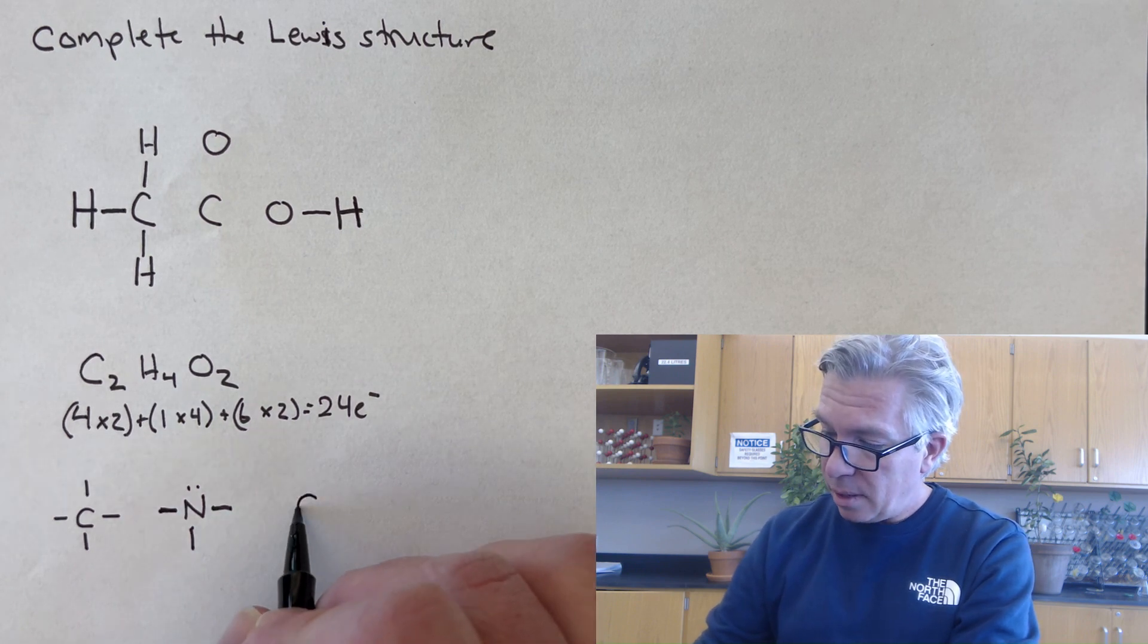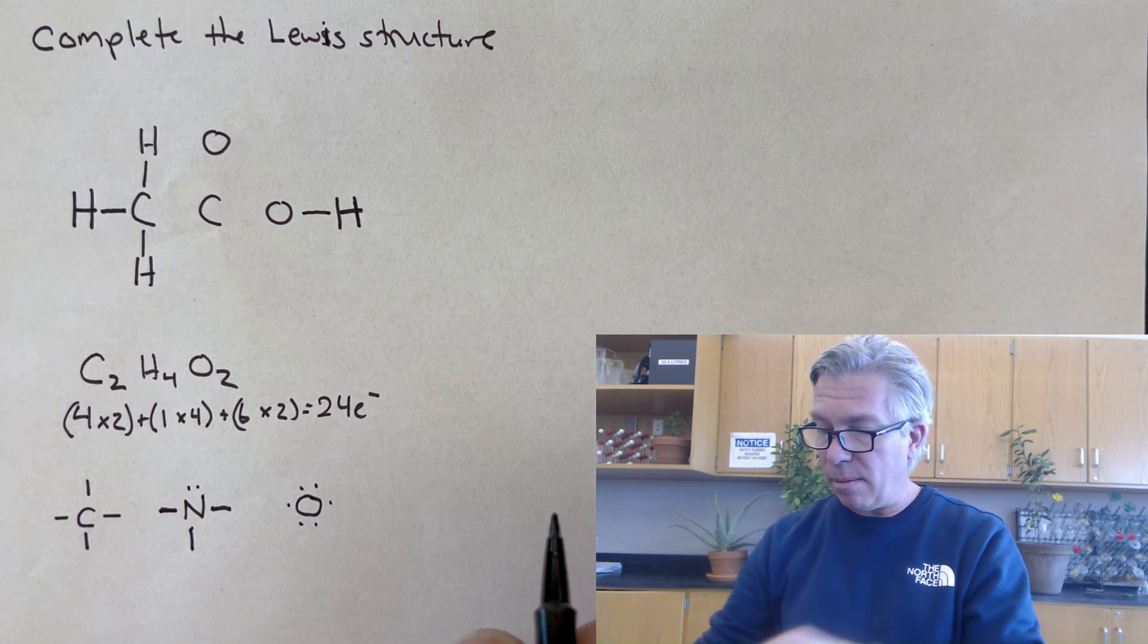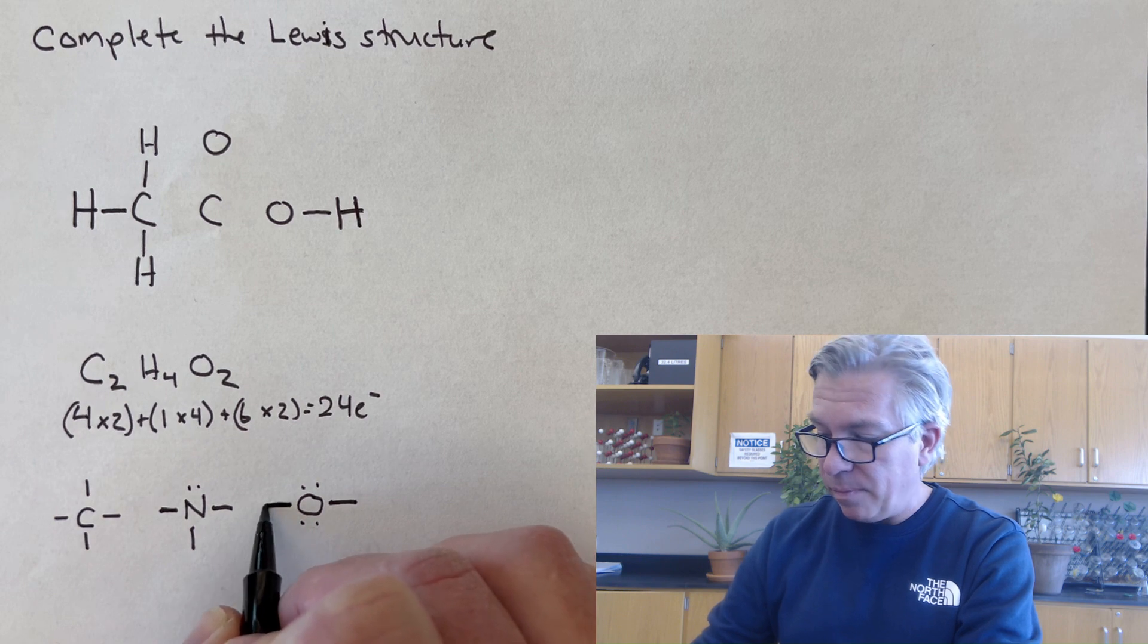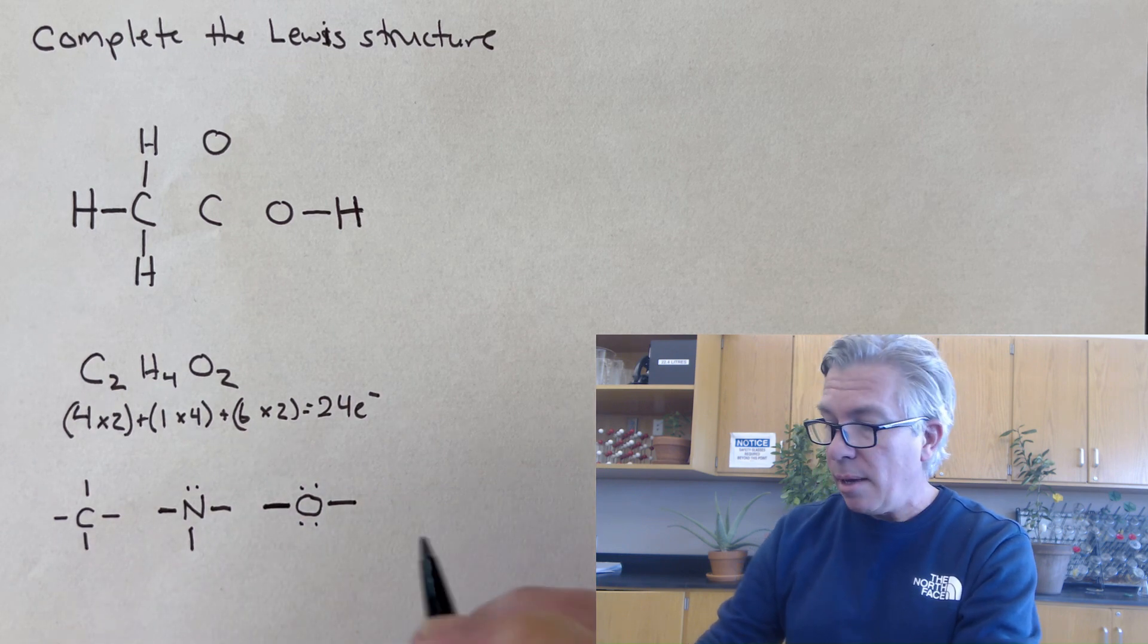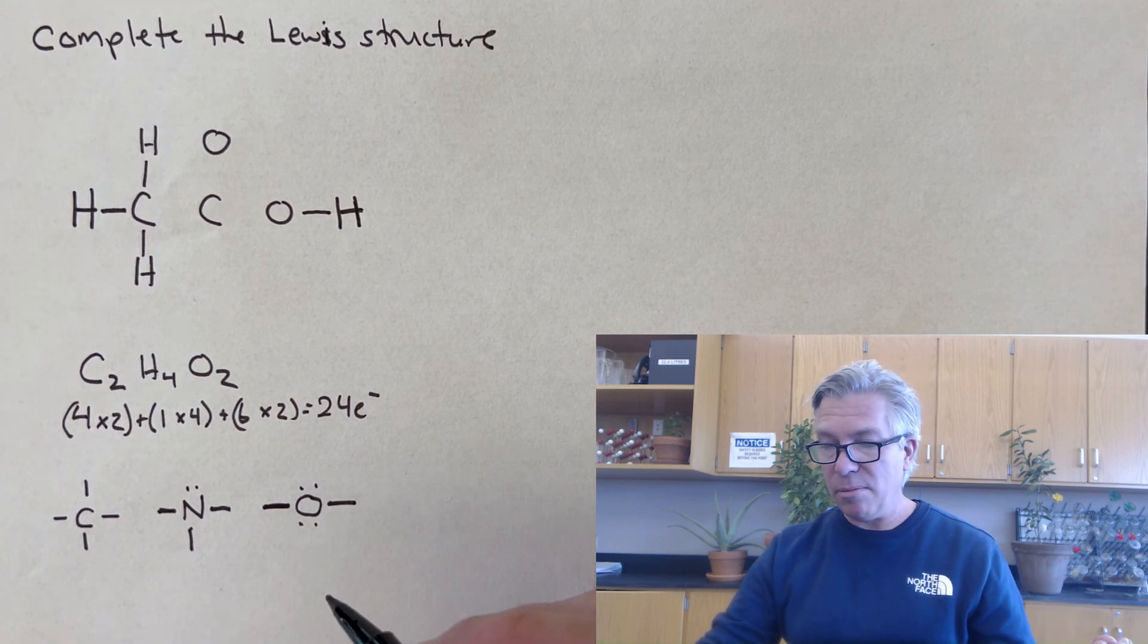Oxygens start with six valence electrons, two of them need to be paired up. So the oxygen will most of the time in typical situations make two bonds and have two lone pairs on it.